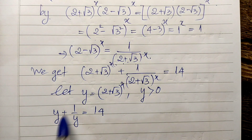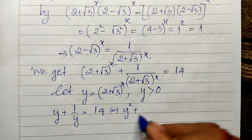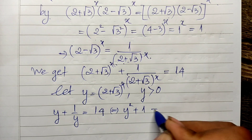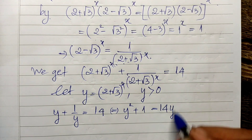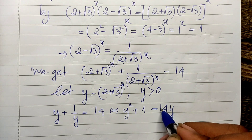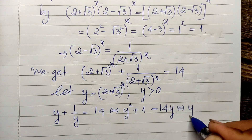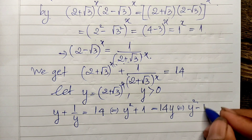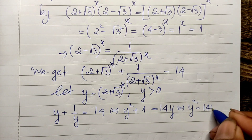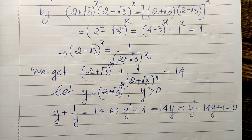Now I multiply both sides of this equation by y. So we get y squared plus 1 equals 14y. Then I move 14y from the right side to the left-hand side. So I get y squared minus 14y plus 1 equals 0.